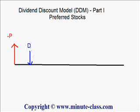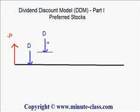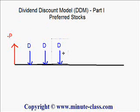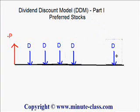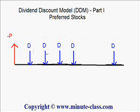Most importantly, this dividend D is going to be repeated forever. So we are going to have a D in the second year, another D in the third year, another D in the fourth year, and this just continues forever. If you don't sell the stock, you will expect to receive the same dividend every year. But although the amount of dividends is the same every year, their net present value is different due to the time value of money. So in the dividend discount model, we will try to find the net present value of all the dividends to be received, and this net present value will be the appropriate price P.